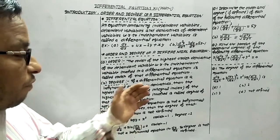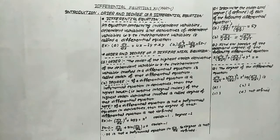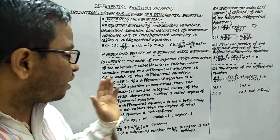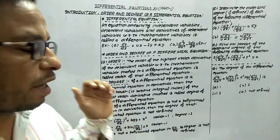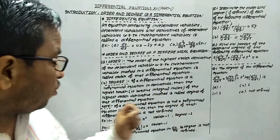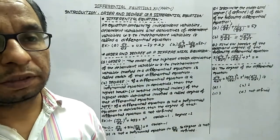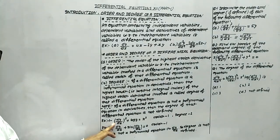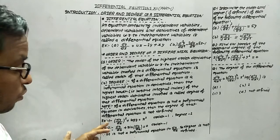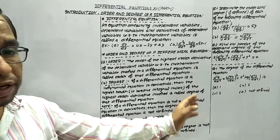Now for degree: if a differential equation is a polynomial equation in derivatives, then the highest power — that is, the positive integral index — of the highest-order derivative involved is called the degree of that differential equation. In the example (dy/dx)² + log y = x², the highest-order derivative is dy/dx and the power of dy/dx is 2, so the degree of this differential equation is 2.